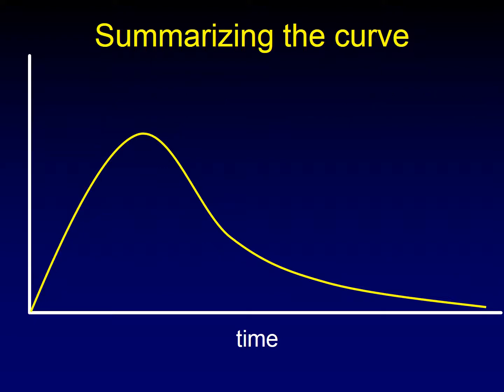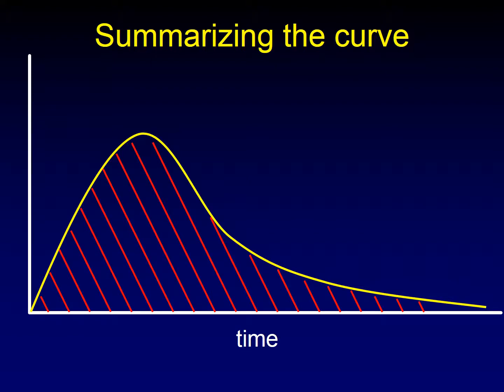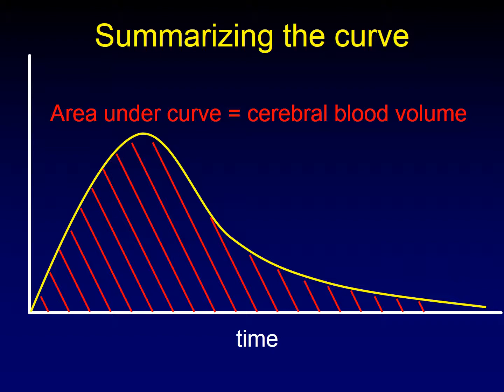The third parameter we're going to utilize is the area under this curve. If we measure the area all under the curve and sum that up, the area under the curve is going to represent cerebral blood volume. Those are the three basic parameters — we use some variations on them, but those are the three basic parameters we use to analyze these complex perfusion curves.